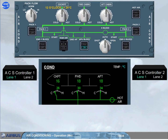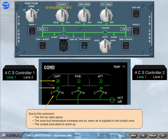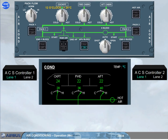Due to this command, the trim air valve opens. The zone duct temperature increases, and so warm air is supplied to the cockpit zone, and the cockpit zone starts to warm up. Once the cockpit zone reaches the demanded temperature, the trim air valve will move, reducing the amount of hot air, and then will move as required to maintain the zone temperature.